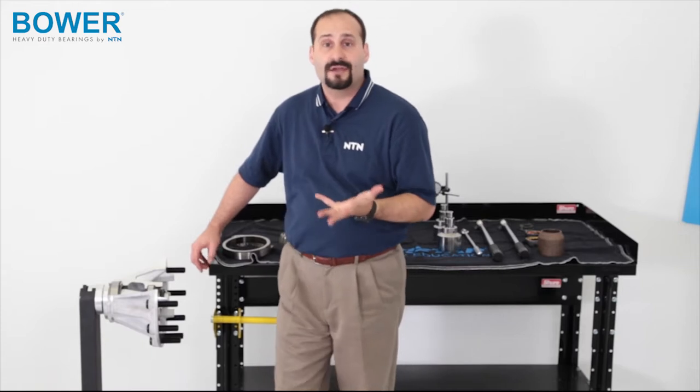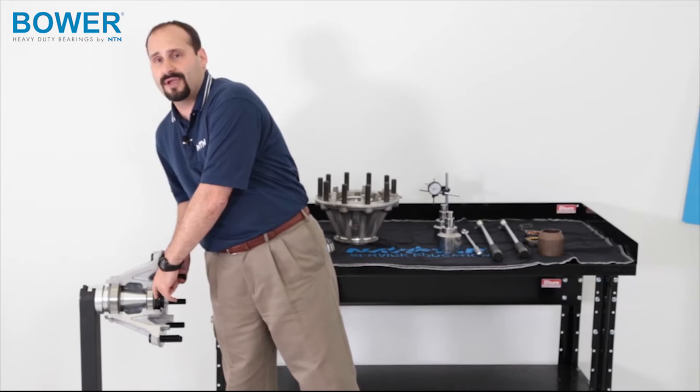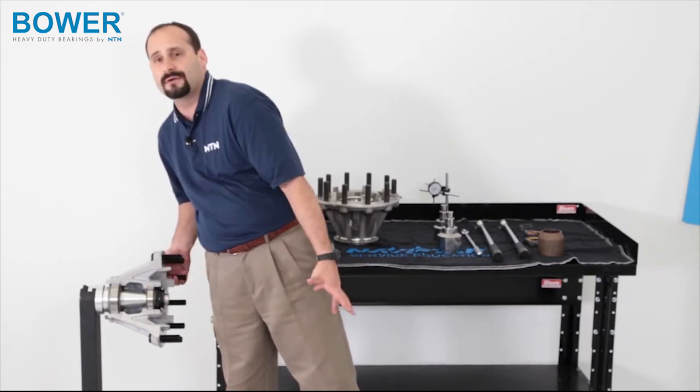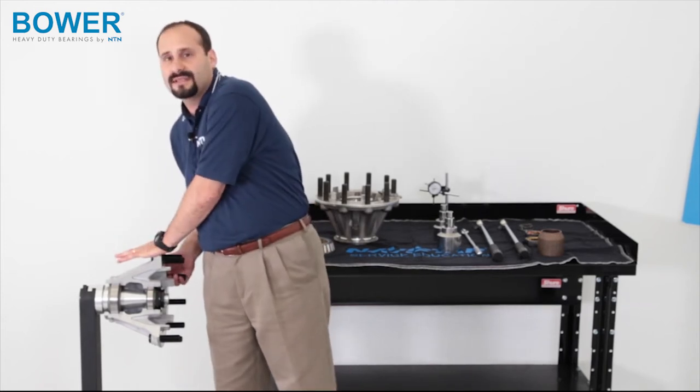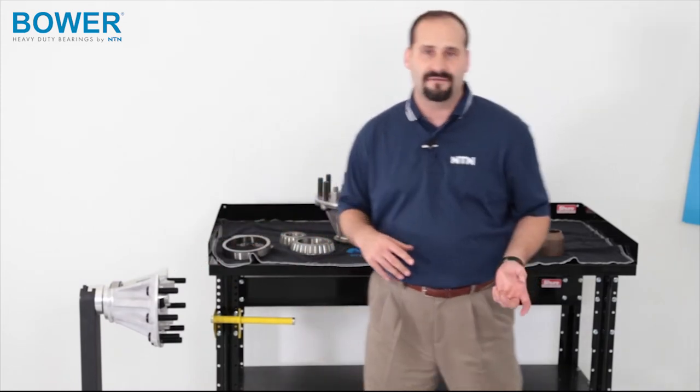You're probably asking, okay, so why should I care? Well, that rib flange is right here. If this should break off, there's nothing holding the rollers in the bearing in. Those rollers fall out. And when those rollers fall out, there's nothing holding this hub on the truck anymore. And that's when you have your wheel-off situation.